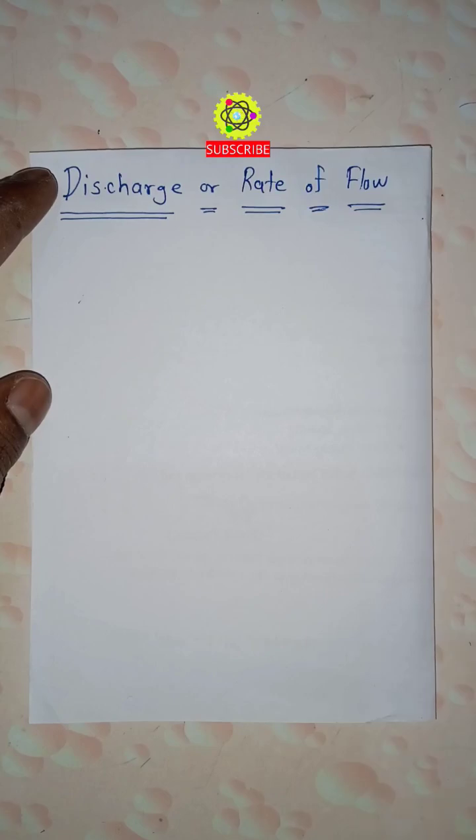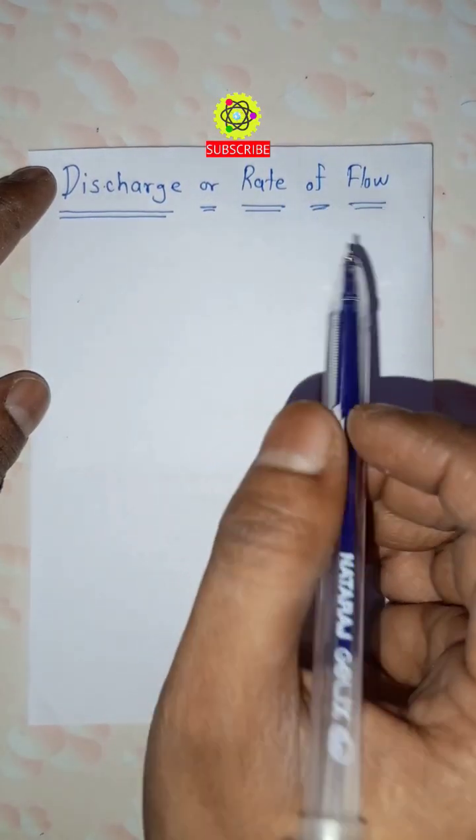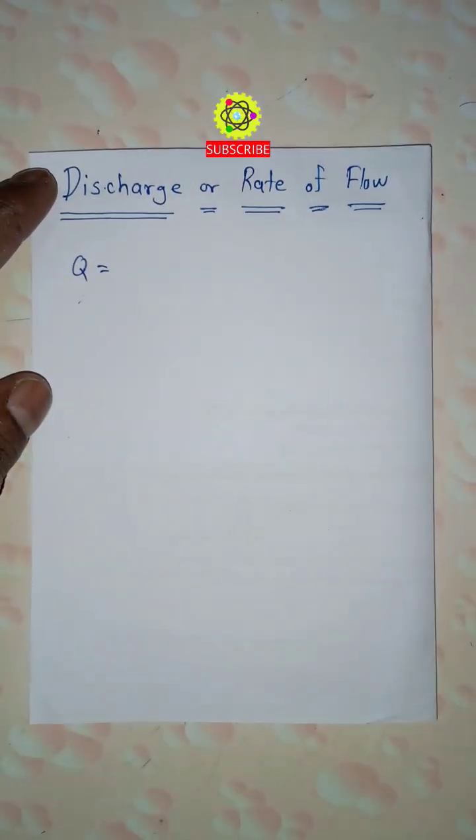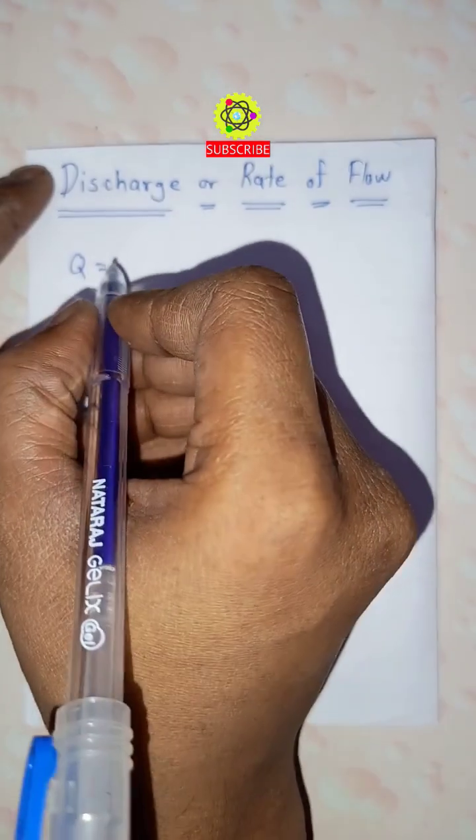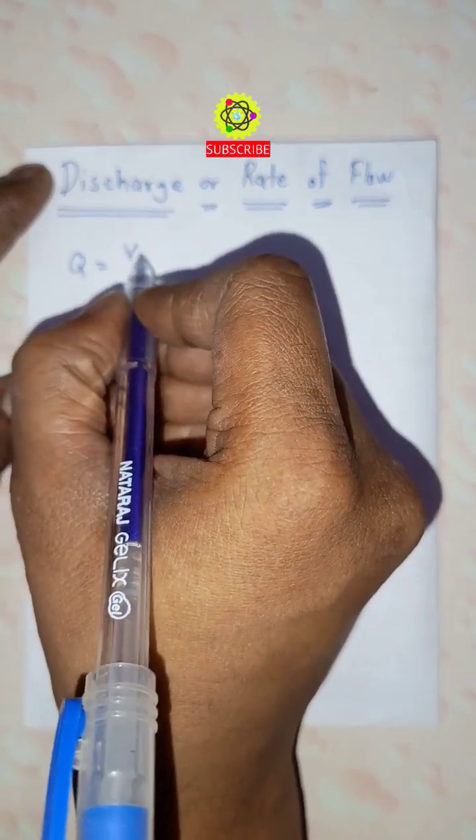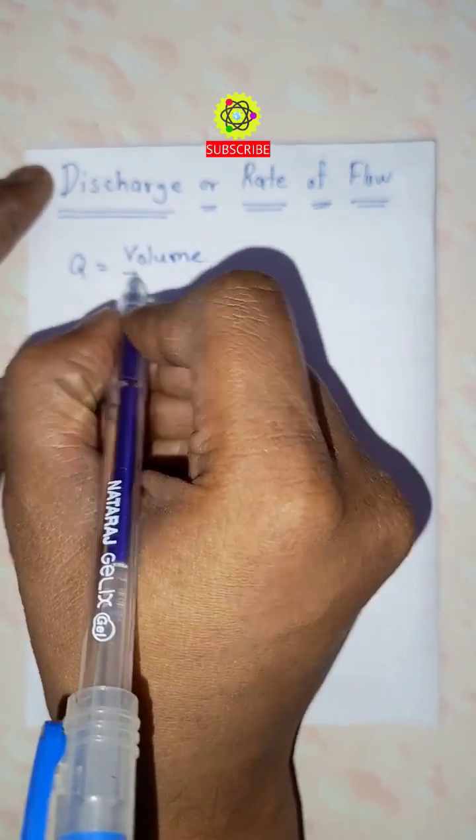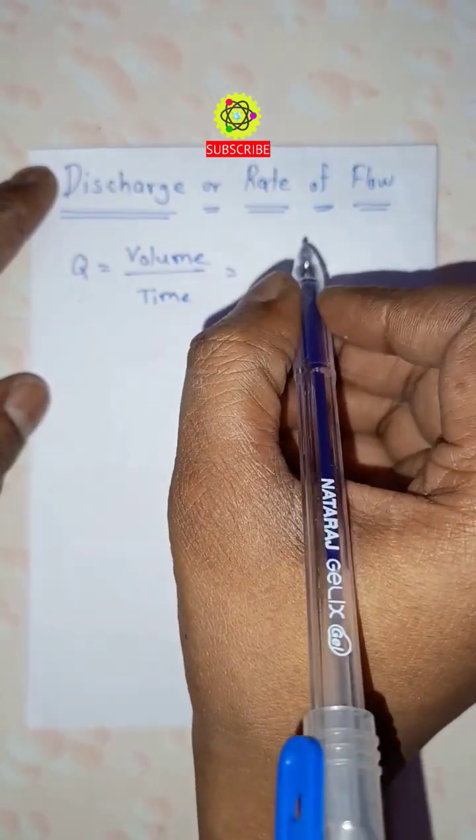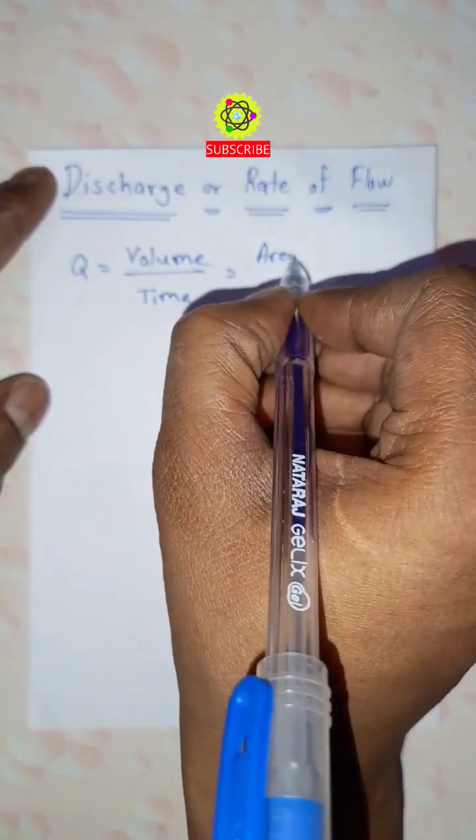Hi students, welcome here. Discharge or rate of flow is denoted by Q, which is actually volumetric flow rate. And it is given by Q equals volume upon time. This can also be simplified as area into length upon time.